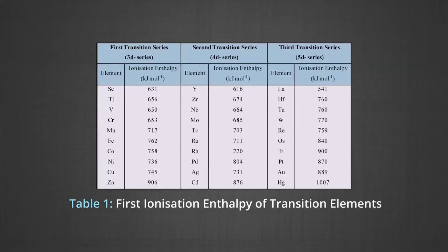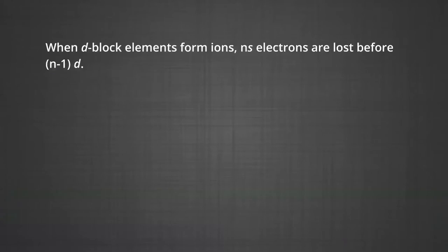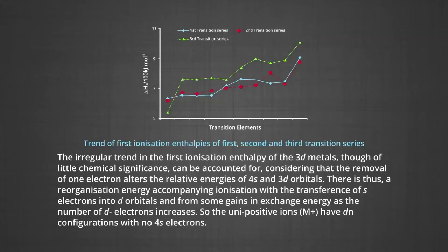The table shows the first ionization enthalpy of transition elements — for the 3D, 4D, and 5D series. When D block elements form ions, Ns electrons are lost before N−1 D electrons. The irregular trend in the first ionization enthalpy of the 3D metals, though of little chemical significance, can be accounted for by considering that the removal of one electron alters the relative energies of 4S and 3D orbitals.